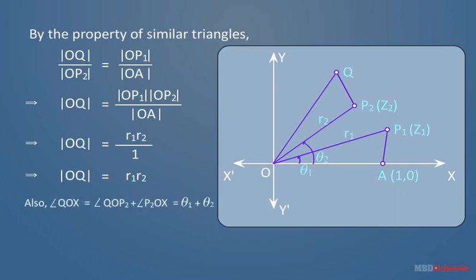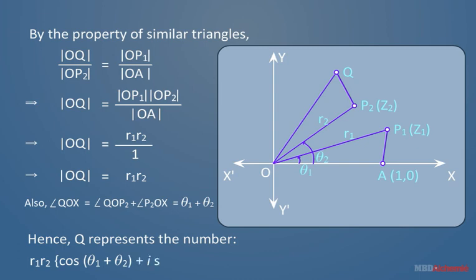Also angle QOX is the sum of angle QOP2 and angle P2OX, that is theta 1 plus theta 2. Hence Q represents the number R1 into R2 multiplied by cos theta 1 plus theta 2 plus iota sin theta 1 plus theta 2. This is nothing but Z1 into Z2.